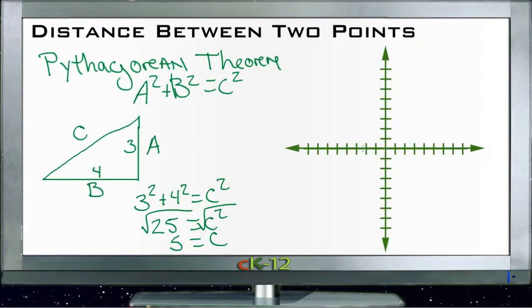Now that helps us when we're finding the distance between two points. If we have two points on the coordinate plane, say this one here at negative 3, 0, and say one up over here at 4, 6, we can take those two points and think of them as being made up of a right triangle.